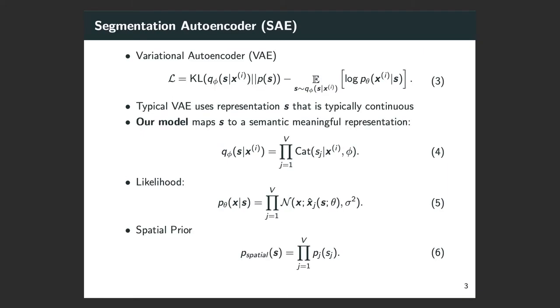We follow the conventional variational autoencoder framework or VAE to optimize the ELBO. In this setup, the approximate posterior is computed through a neural network called encoder with parameter phi, and the image likelihood is computed through a neural network called decoder with parameter theta. Typically, the representation s is chosen to be a continuous random variable such as Gaussian for its simplicity and tractability. However, this representation is hard to interpret.